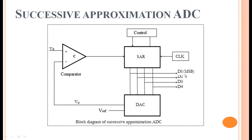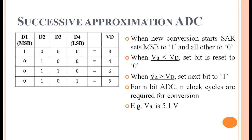The comparator compares the two voltages VA and VD, and its output triggers the action in the SAR, giving us the output values D1, D2, D3, D4 — 4 bits. We will definitely go through an example for better understanding of the working of this system, with details presented in tabulated form.